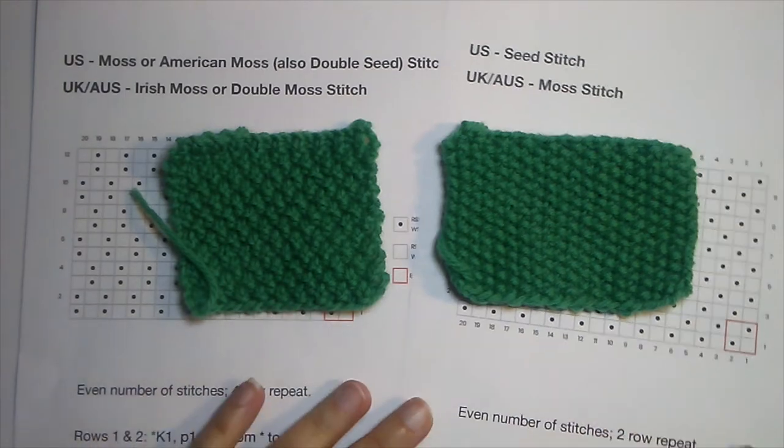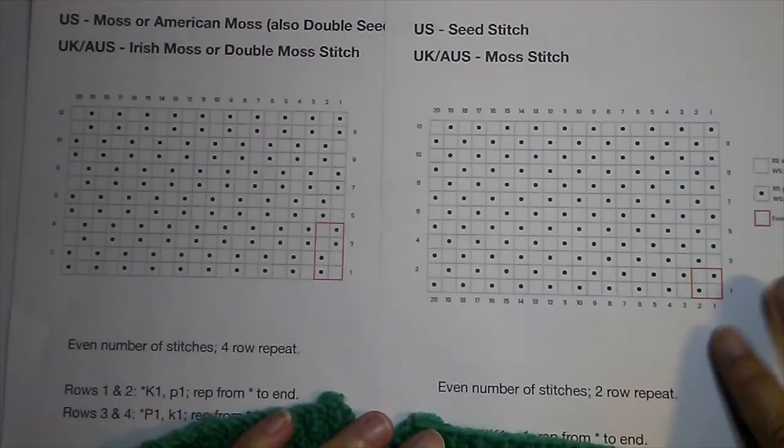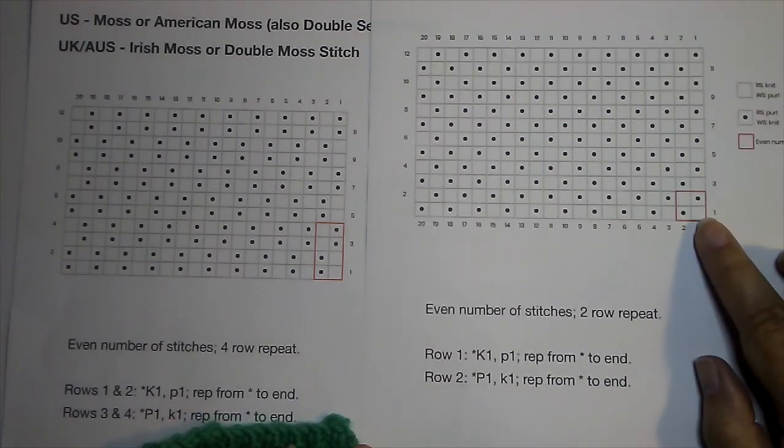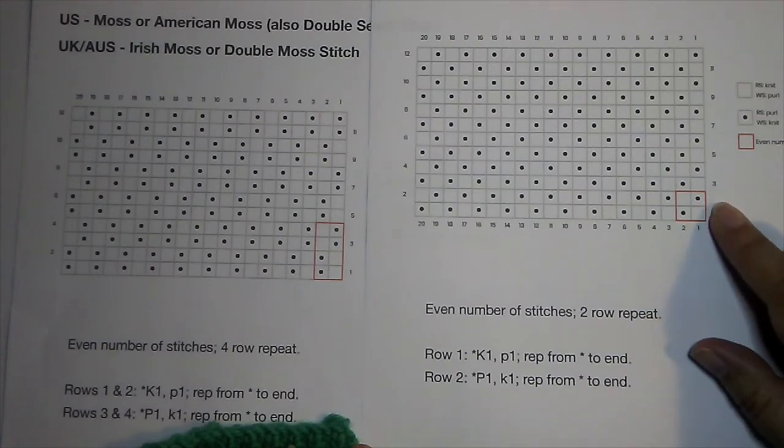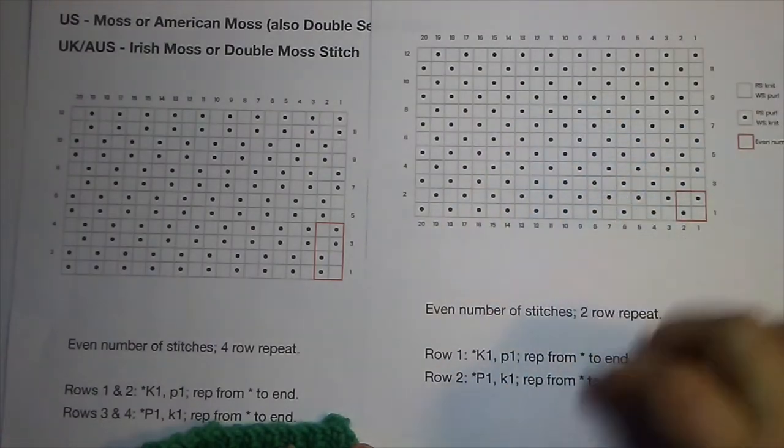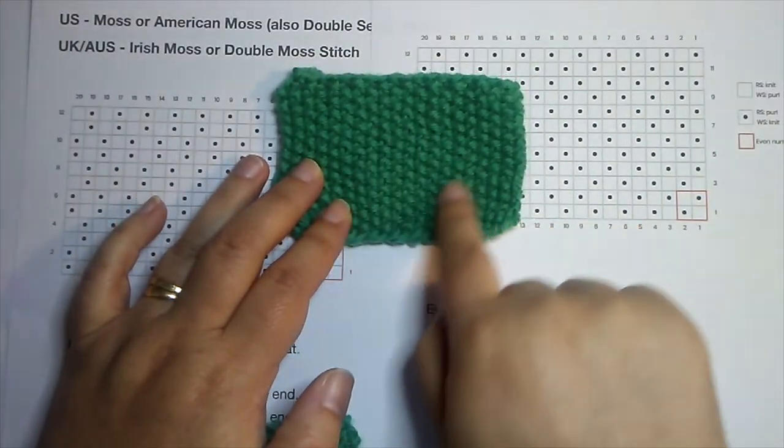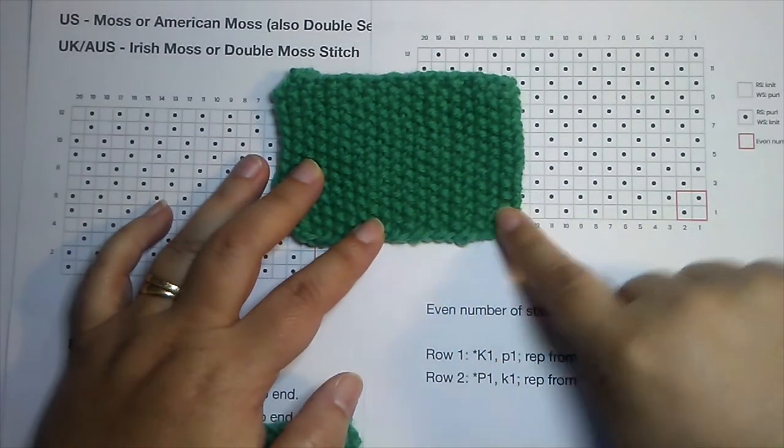But let's actually look at the patterns themselves. Seed stitch, or moss stitch if you're in the UK, it's an even number of stitches. It's a knit one, purl one pattern, and it's a two row repeat. And this chart represents what's happening on our swatch, and you can see all of those little purl bumps are evident in here. That little seed or moss pattern is right there.